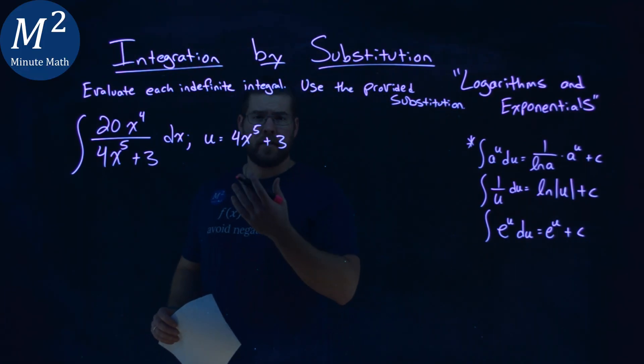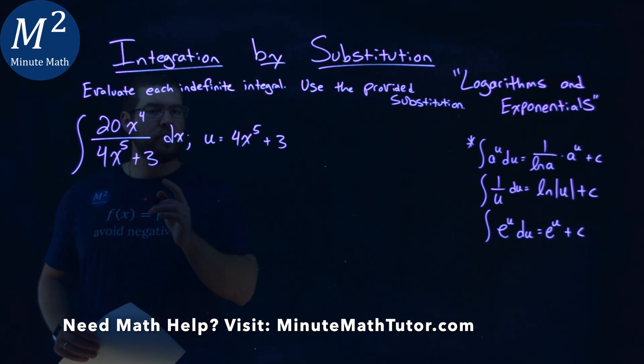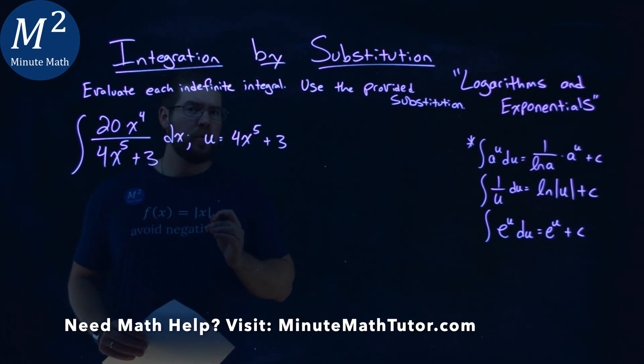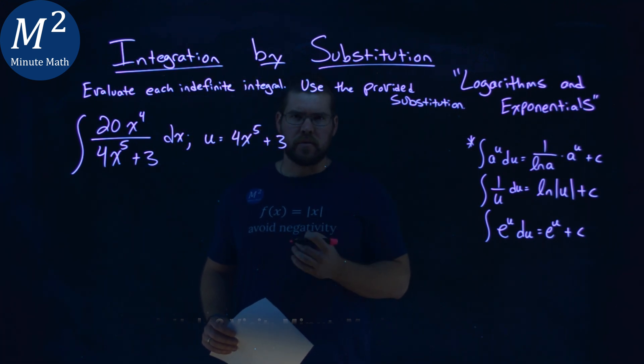We're given this problem right here, the integral of 20x to the fourth over 4x to the fifth plus 3 dx, and we're given the u value of 4x to the fifth power plus 3, and we have to evaluate this indefinite integral.